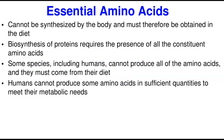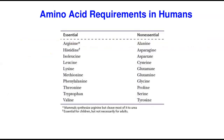Essential amino acids are those amino acids that cannot be synthesized in the body and must therefore be obtained from dietary sources. The synthesis of protein requires the presence of every amino acid — all 20 — and if you cannot synthesize some of them, you need to get them from dietary sources. Some species, including humans, cannot produce all of them, and even when humans can produce a few, it may not be in sufficient amount to meet the demand of protein synthesis.